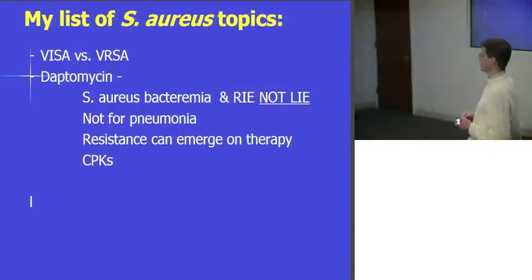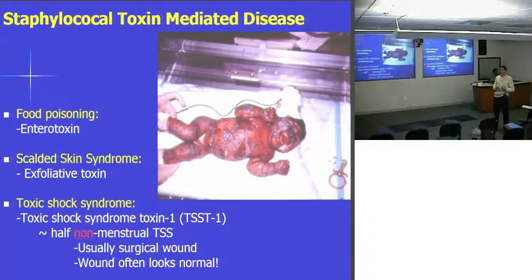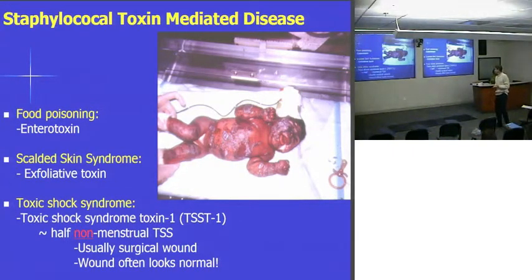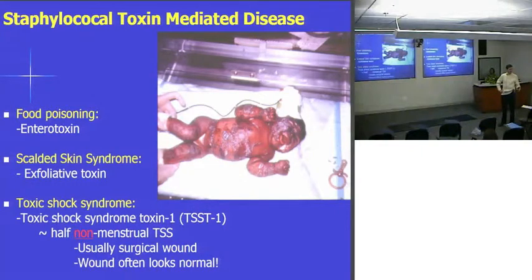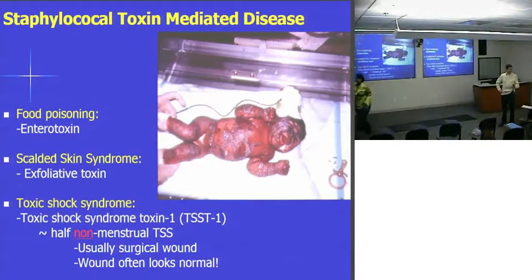I'm going to start off by going over staph aureus disease. It's a diverse problem — it causes trouble in a lot of different ways. It actually produces proteins and toxins that can cause disease. So it can cause toxin-mediated disease. There are basically three forms of this toxin-mediated disease. Enterotoxins, which are essentially food poisoning — the classic example is staphylococcal food poisoning with potato salad because of the dairy products. Typically eight to ten hours after going to a picnic where the potato salad's been out too long, you get nausea and vomiting, and you feel terrible for a while, but it gets better.